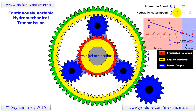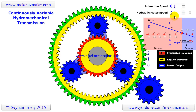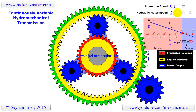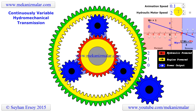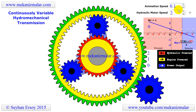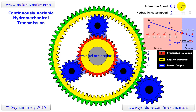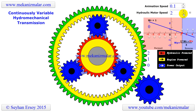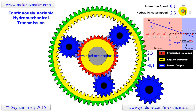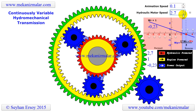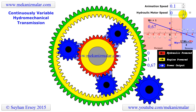A planetary gear mechanism can be used as a torque splitter or as a speed adder mechanism. If we have one power input to a planetary gear system, we can split this power into two different power outputs. In this video, I will demonstrate how a planetary gear system can be used as a speed adder.